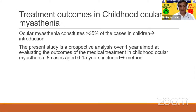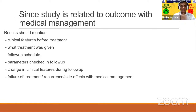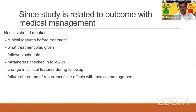One work which got accepted at AIOS was 'Treatment Outcomes in Childhood Ocular Myasthenia' — a very simple straightforward heading. The first sentence should introduce the study and include the aim: 'The present study is a prospective analysis over one year aimed at evaluating the outcomes of medical treatment in childhood ocular myasthenia.' It includes eight patients aged 6 to 15 years — that covers the method and inclusion criteria. Then we need to mention the results: clinical features before treatment, what the medical treatment — pyridostigmine, steroids — caused, changes during outcome, and the follow-up period.